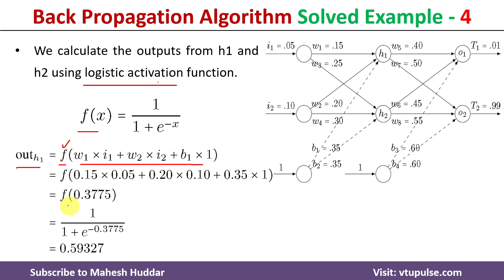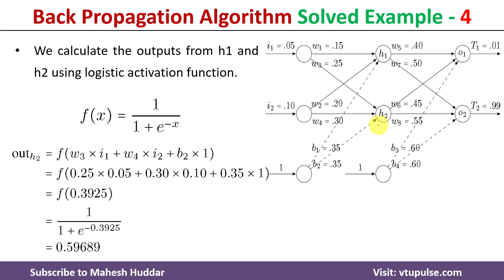Substituting values, we get f(0.3775) = 1 / (1 + e^(−0.3775)), which gives output at h1 = 0.593275. Similarly, the net input at h2 is w3·i1 + w4·i2 + b2·1, which evaluates to 0.3925. Then f(0.3925) = 1 / (1 + e^(−0.3925)) gives output at h2 = 0.59689.